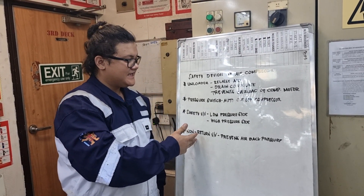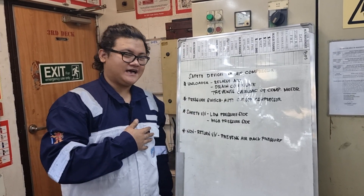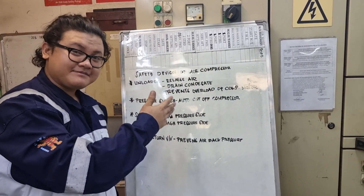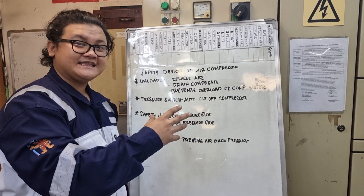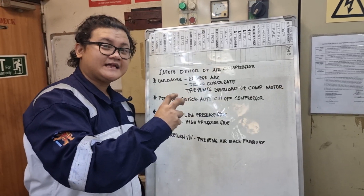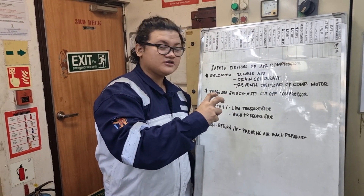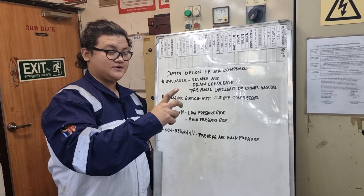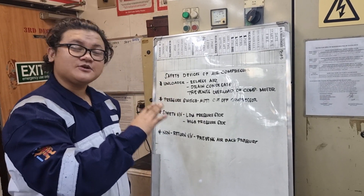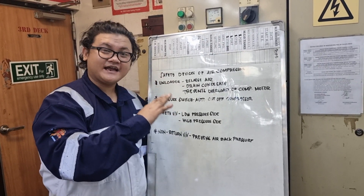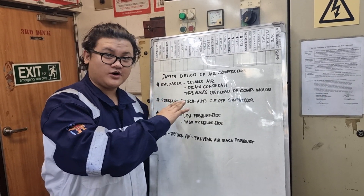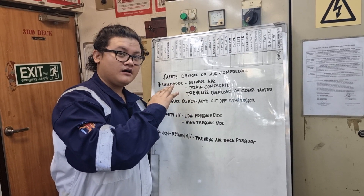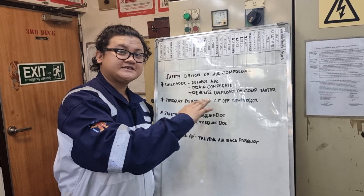Firstly, what is a loader? A loader is the one that releases trapped air that is inside of the compressor that prevents it from sparking. It also drains the water in the compressor. The reason why a loader releases air and drains condensate or water in the compressor is to prevent overload of your compressor motor.